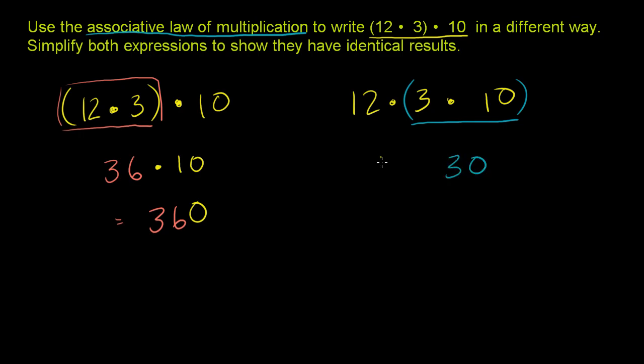And we still want to multiply the 12 times that. And what's 12 times 30? And we've seen this several times before. You can view it as 12 times 3, which is 36, but we still have this zero here. So that is also equal to 360.